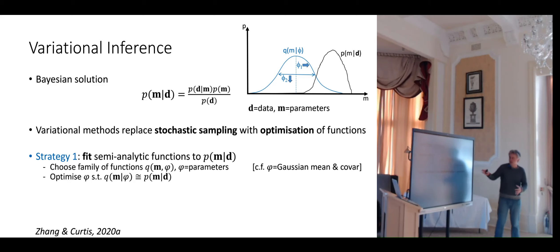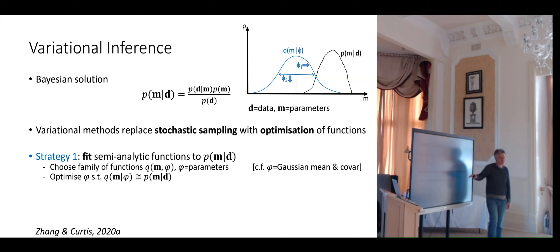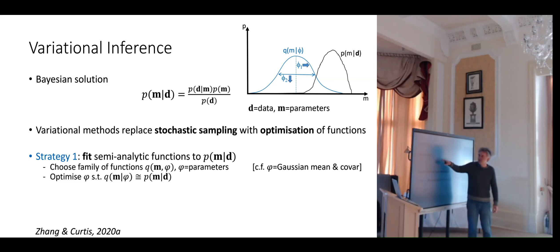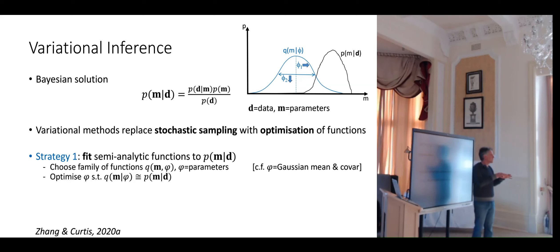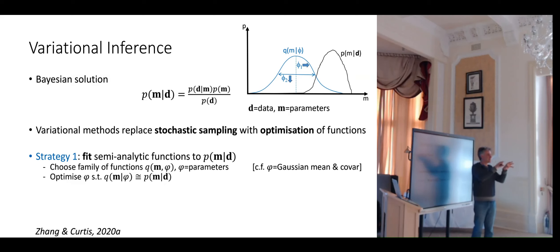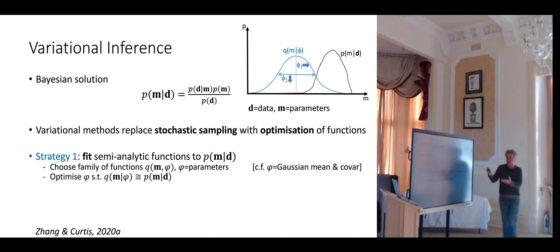Instead of stochastic sampling, we're going to use a totally different approach. Variational methods work by fitting semi-analytic functions to the posterior. The posterior has some shape — whatever it is — and that shape can be described by a function. So we take a class of functions and try to fit that shape. That's clearly some kind of optimization problem: we find an optimal fit to the shape, and that's how we set up these methods to use optimization.